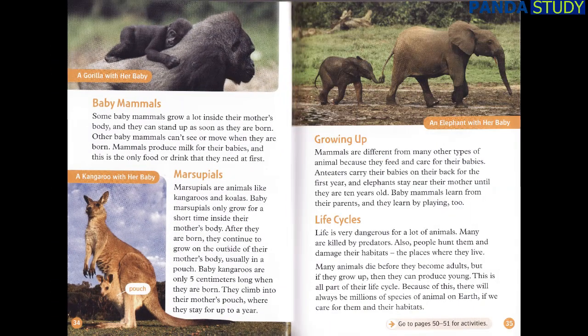Baby mammals. Some baby mammals grow a lot inside their mother's body and they can stand up as soon as they are born. Other baby mammals can't see or move when they are born. Mammals produce milk for their babies, and this is the only food or drink that they need at first.